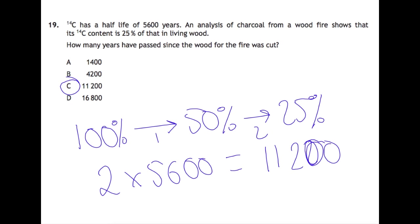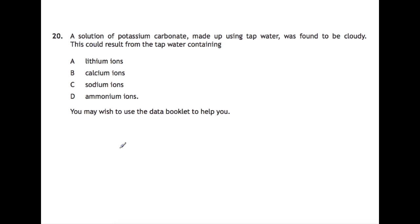And finally question 20. A solution of potassium carbonate made up using tap water was found to be cloudy. This could result from the tap water containing which of the ions and you may wish to use a data book to help you. So you are looking for which of these ions would react with the carbonate to form an insoluble compound that would be a precipitate and would make the water look cloudy. So your answer here is B, calcium ions.